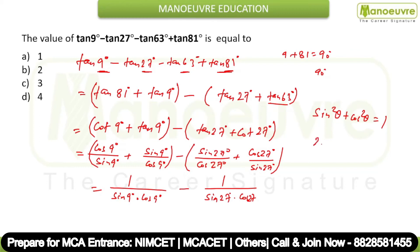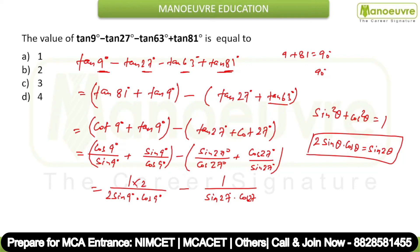We use the formula 2 sin θ cos θ = sin 2θ. Multiply by 2 accordingly to get 2 upon sin 18° and 2 upon sin 54°. Taking common factor 2, we get 2 times (sin 54° minus sin 18°) upon sin 18° times sin 54°. Now apply the formula sin A minus sin B = 2 cos((A+B)/2) sin((A−B)/2).